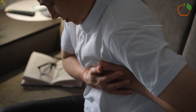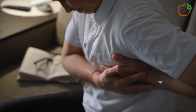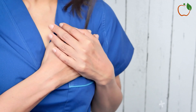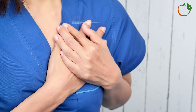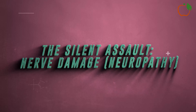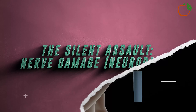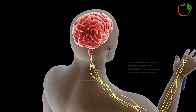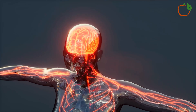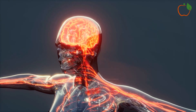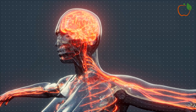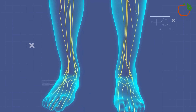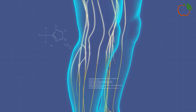Peripheral artery disease: in PAD, the arteries supplying blood to the legs and feet become narrowed or blocked, leading to pain, numbness, and in severe cases, limb amputation. One of the most insidious effects of diabetes is its ability to damage the nerves throughout the body, a condition known as neuropathy. This nerve damage can have widespread consequences, ranging from mild discomfort to life-altering disabilities.